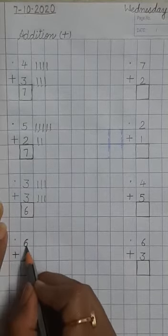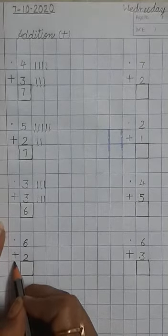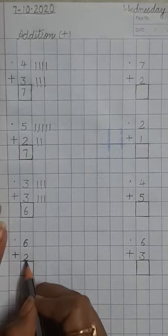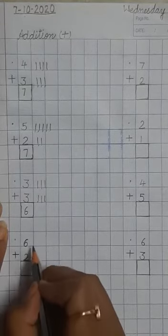Put a dot here. Here we have number 6. Make a symbol of plus. Then write number 2 just below of 6. Draw a box like this.